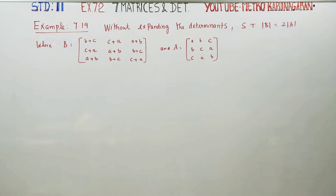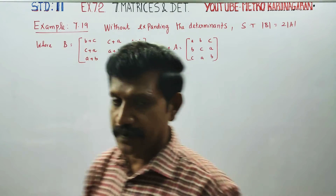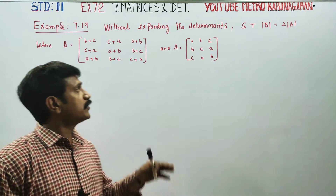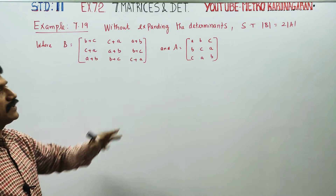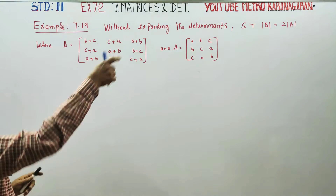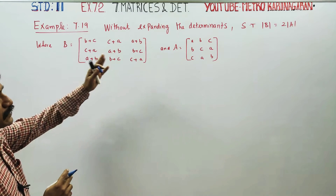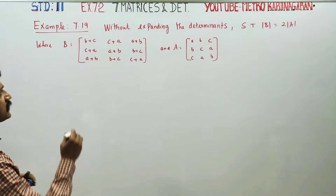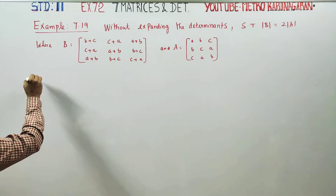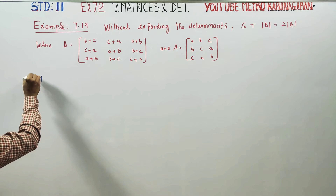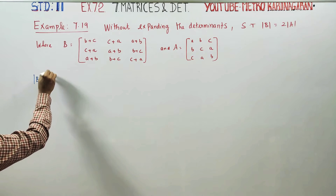Dear Learn Standard Students, I am Etru Karanagaran. In Example 7.19, we need to show that the Determinant of B is equal to 2 times the Determinant of A. Without expanding the Determinant, I am going to start with the Determinant of B.